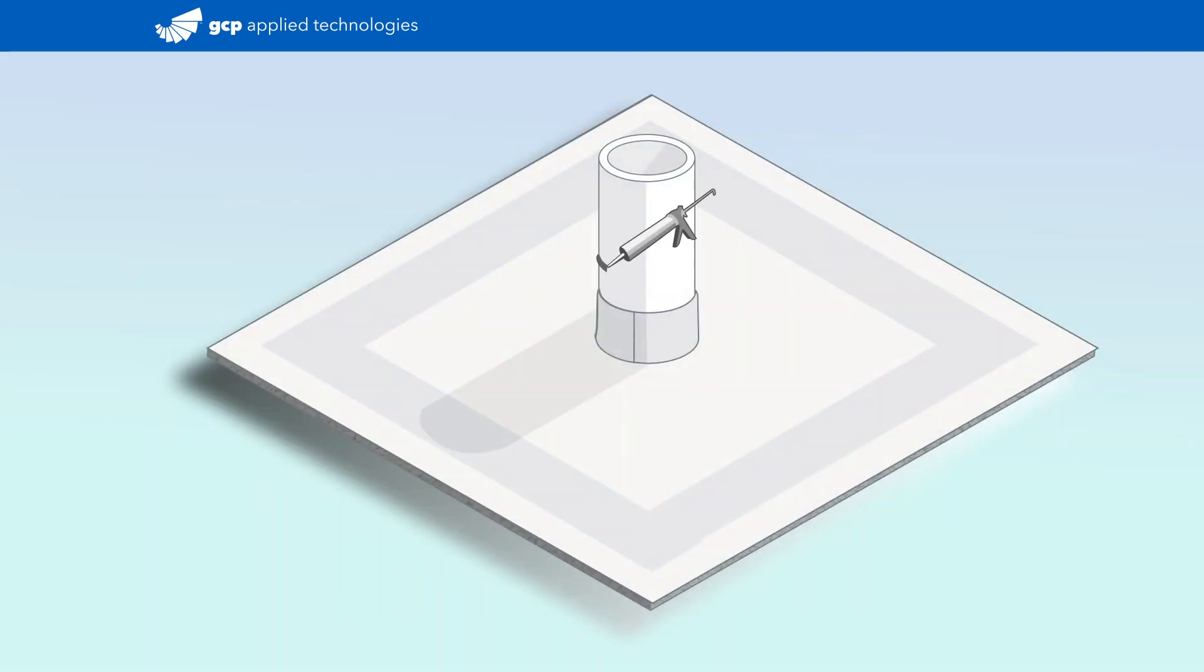To complete the process, install ADCOR 500S or other GCP-approved water stop directly above the pre-proof tape that's terminating the penetration.